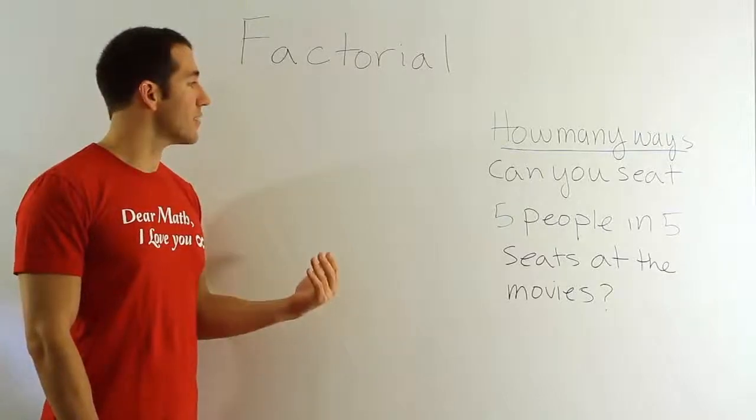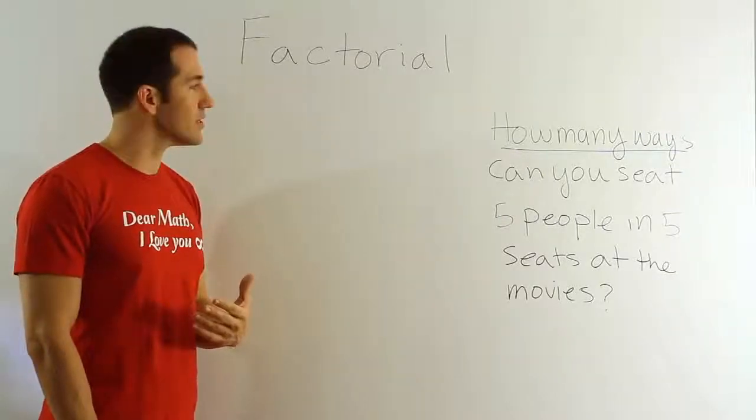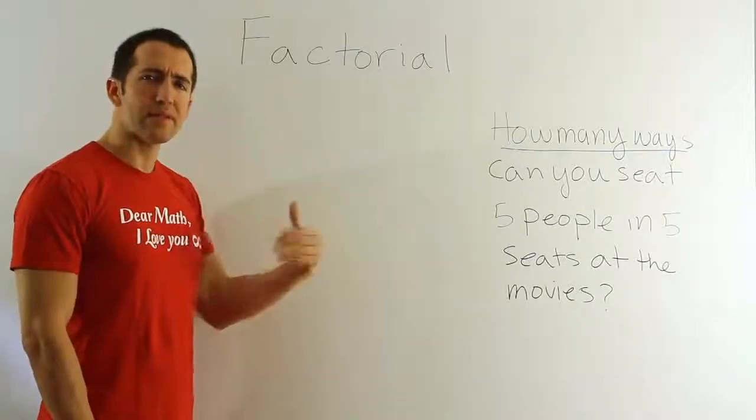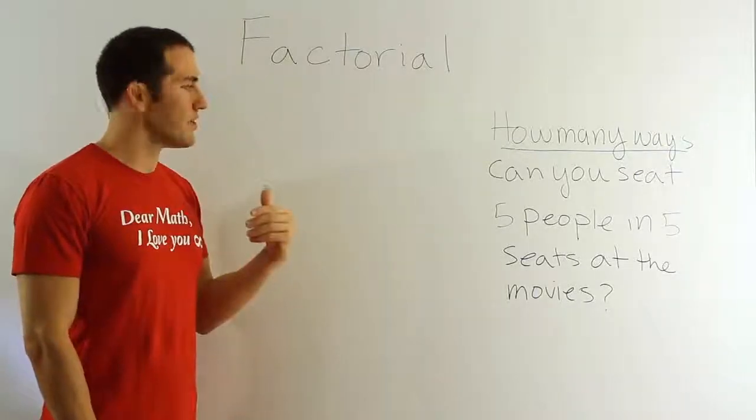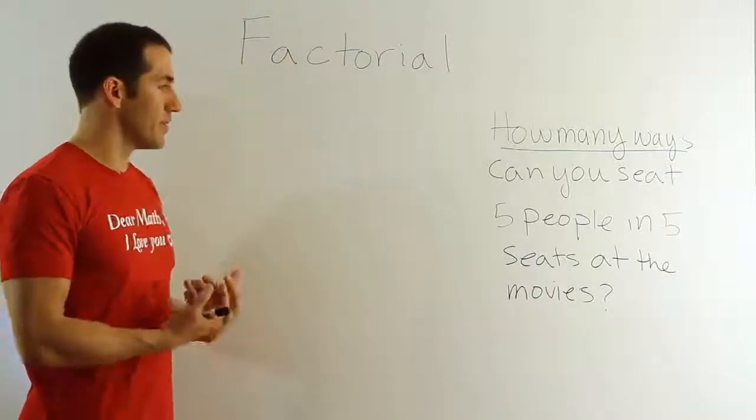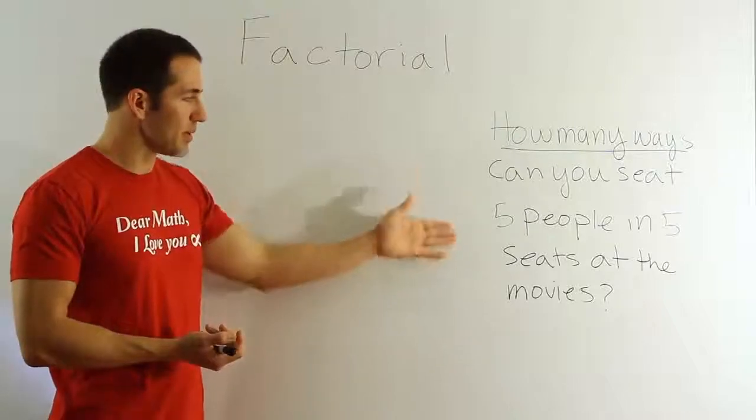And that video would tell you that when you have a problem like this, one way you would usually try to approach it is to think of, can we break this up into steps that have to be accomplished? And then we should think about how many ways those steps can be accomplished. So first of all, how many steps would there be to do this? Well, we have to sit five people in five seats.